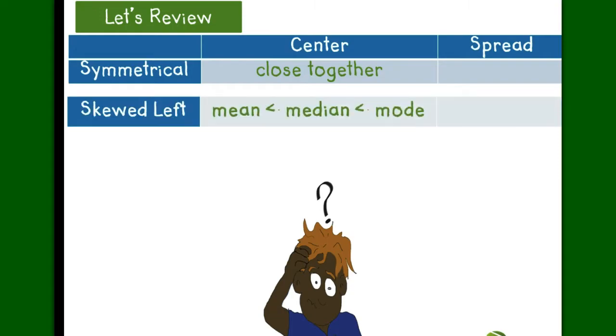When a graph is skewed left, usually your mean and median are less than the mode and we see that generally mean is less than the median, which is less than the mode.